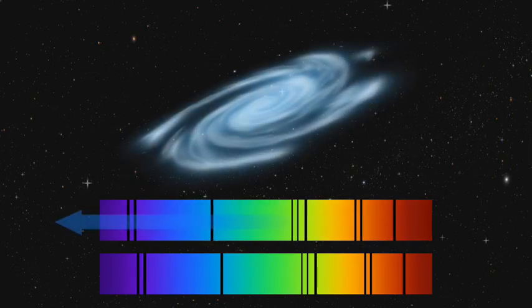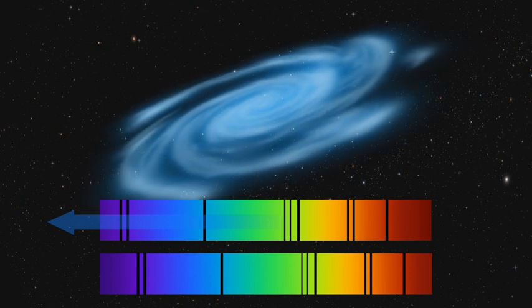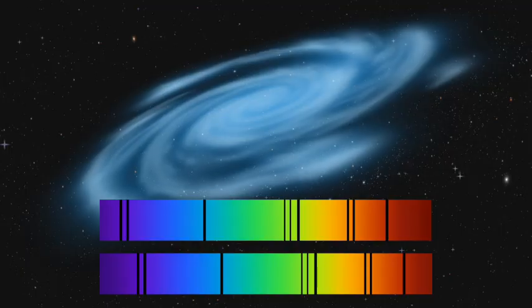If the galaxy was moving towards an observer on the Earth, the spectral lines would shift to the blue end of the spectrum. This is known as a blue shift.